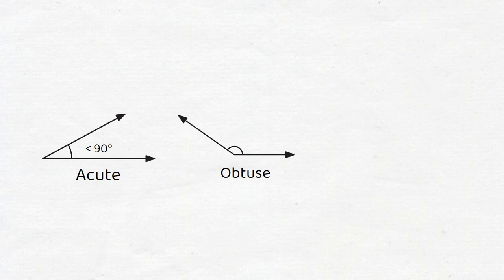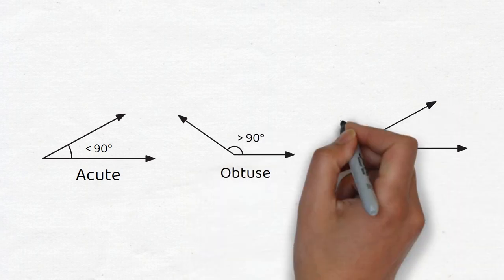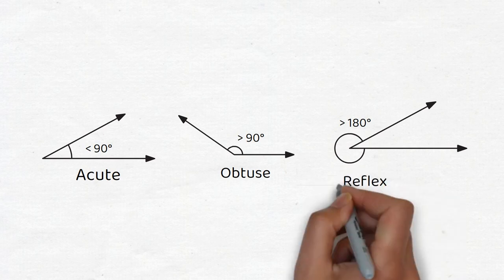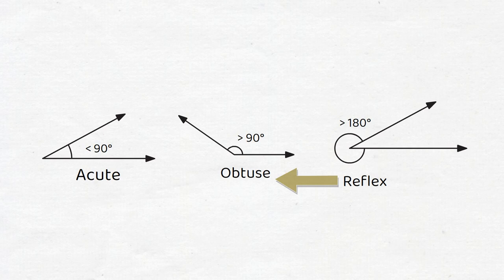An angle is called acute if its measure is less than 90 degrees, and it's called obtuse if its measure is greater than 90 degrees. When an angle exceeds 180 degrees, it's called a reflex angle. Note that a reflex angle is obtuse, but not all obtuse angles are reflex.